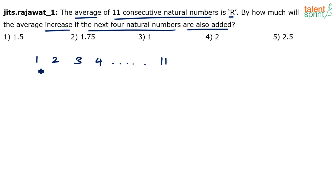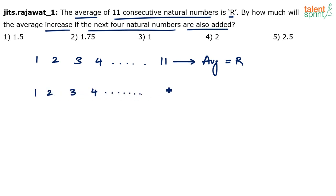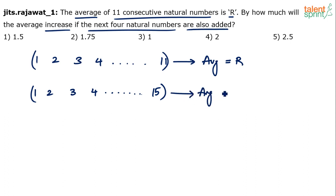There are 11 consecutive natural numbers for which the average is R. By how much will the average increase if the next four natural numbers are also added? The next four natural numbers after 11 are 12 to 15, so we go up to 15. Find out the new average and then consider the difference — by how much will the average increase.